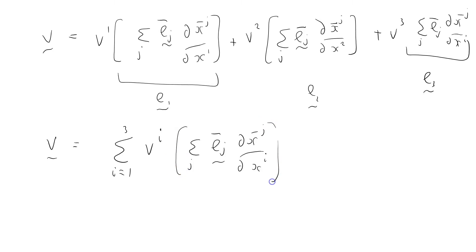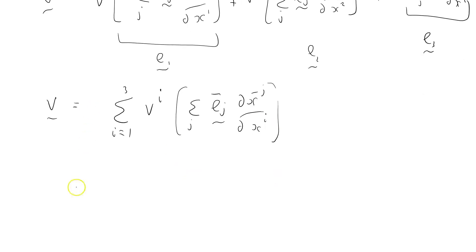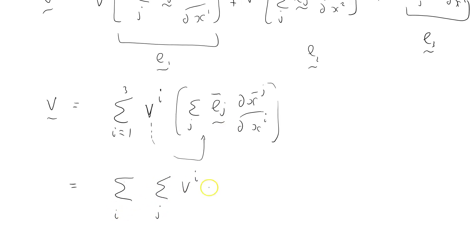Now I'm going to rearrange this. I'm going to move that vi inside — pick it up and stick it next to the rest of the terms. So it becomes sigma over i, sigma over j, vi times e_j bar, dx bar j by dx i.